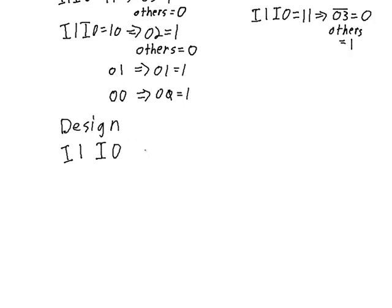And then we have four different outputs. So each one of those outputs is actually going to need its own truth table and its own logic circuit. Let's just look at output 3 right now.